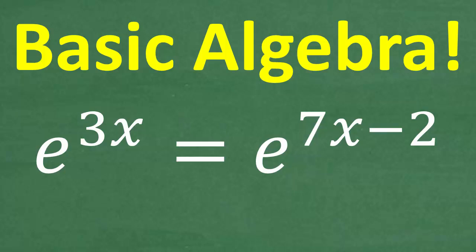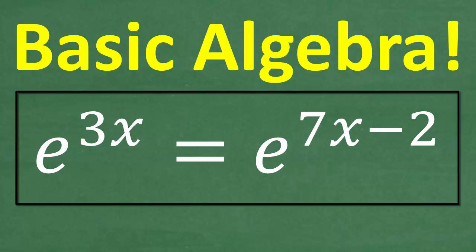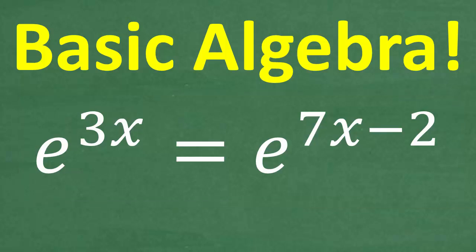This equation may look a little complicated or intimidating for some of you, but it's actually very easy to solve with just basic algebra. We have e to the 3x is equal to e to the 7x minus 2, and what we want to do is solve for x. If you can figure this out, go ahead and put your answer in the comment section, and then we'll walk through exactly how to solve this problem step by step.